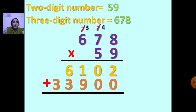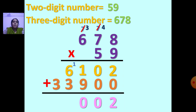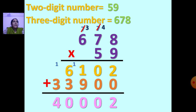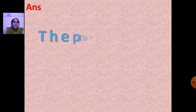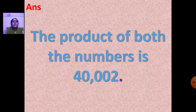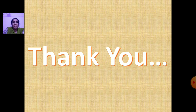Now draw a line, put the plus sign, and add. 2 plus 0 is 2. 0 plus 0 is 0. 1 plus 9 is 10 — 0 down, carry 1. 6 plus 1 is 7. 7 plus 3 is 10 — 0 down, carry 1. 3 plus 1 is 4. The answer is 40,002. The product of both numbers is 40,002. With this we have completed this chapter. Thank you.